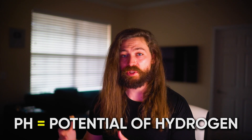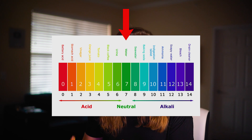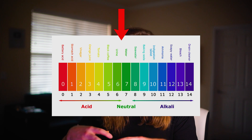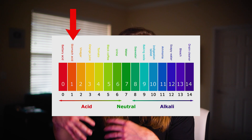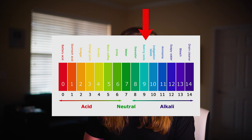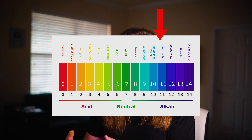pH stands for potential of hydrogen, which basically measures the concentration of hydrogen ions in a solution. pH is measured on a scale from zero to 14, with water being perfectly balanced at seven. If something is acidic, it has a lot of hydrogen ions and measures between zero and 6.9. If something is alkaline or basic, it has a lot of negatively charged hydroxide ions and measures between 7.1 and 14. When water auto-ionizes with too many hydrogen or hydroxide ions present, that's where you get acidity or alkalinity, measured on the pH scale.